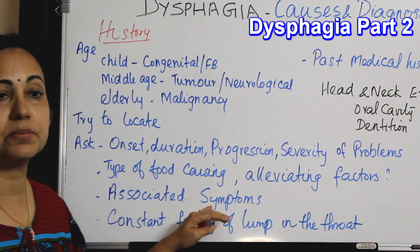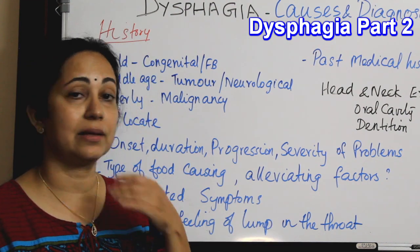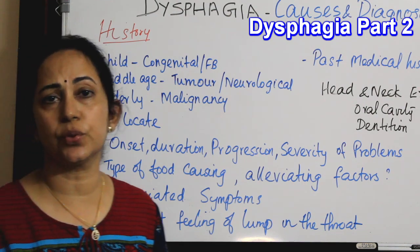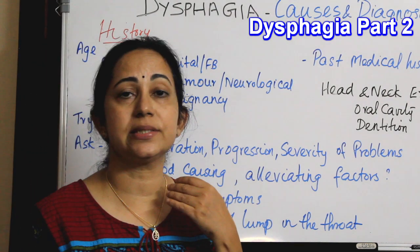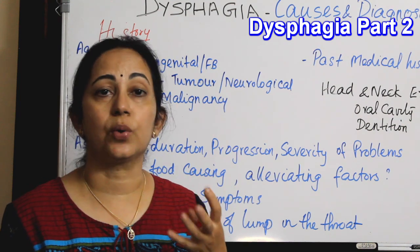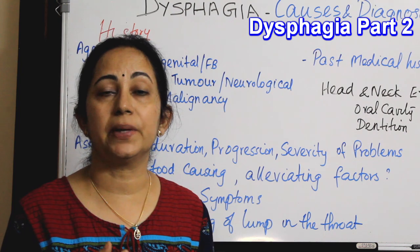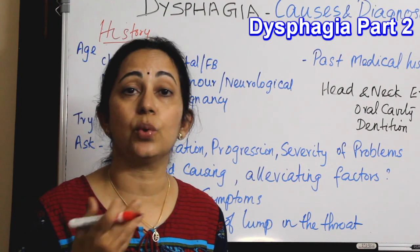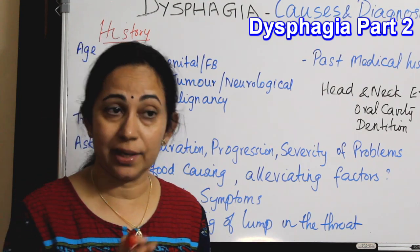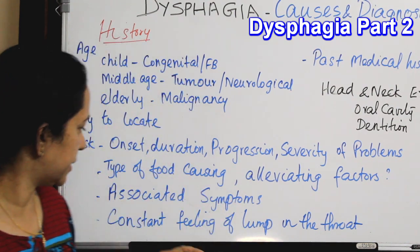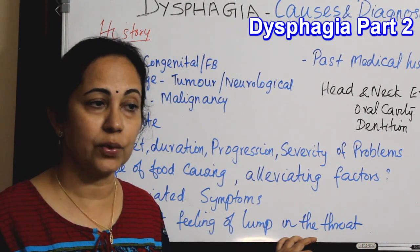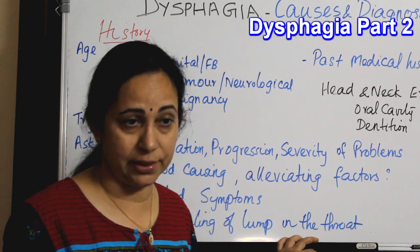Then ask about associated symptoms, such as nasal regurgitation or regurgitation of food. If the food is regurgitating immediately after swallowing, there is more chance of an obstructive lesion. If the patient is complaining of regurgitation many hours after taking food, there is more chance of a pharyngeal pouch. If there is a constant feeling of a lump in the throat, the first diagnosis would be globus pharyngeus.